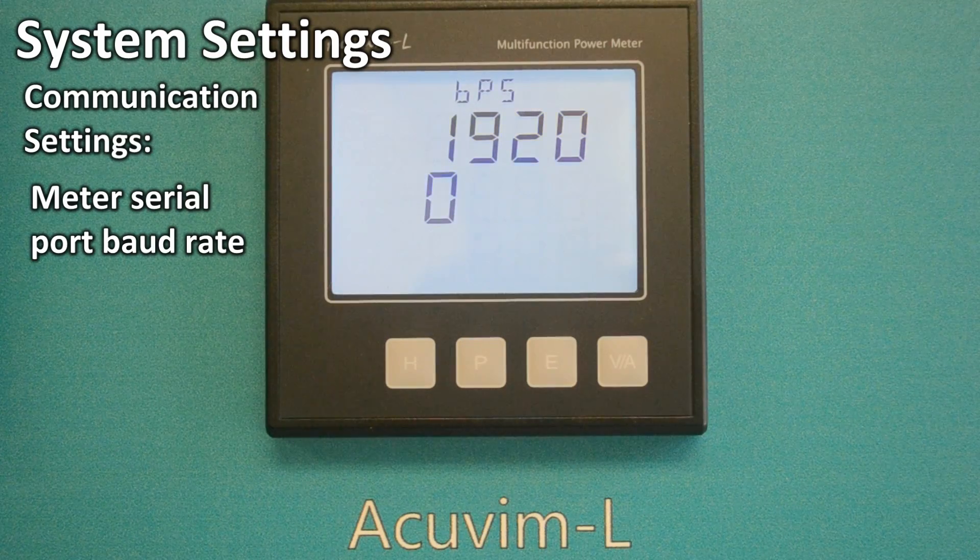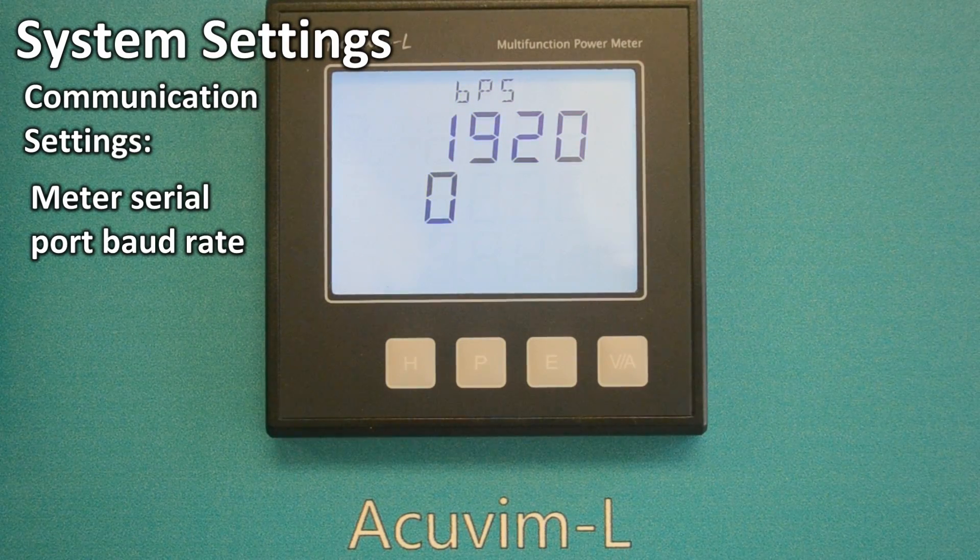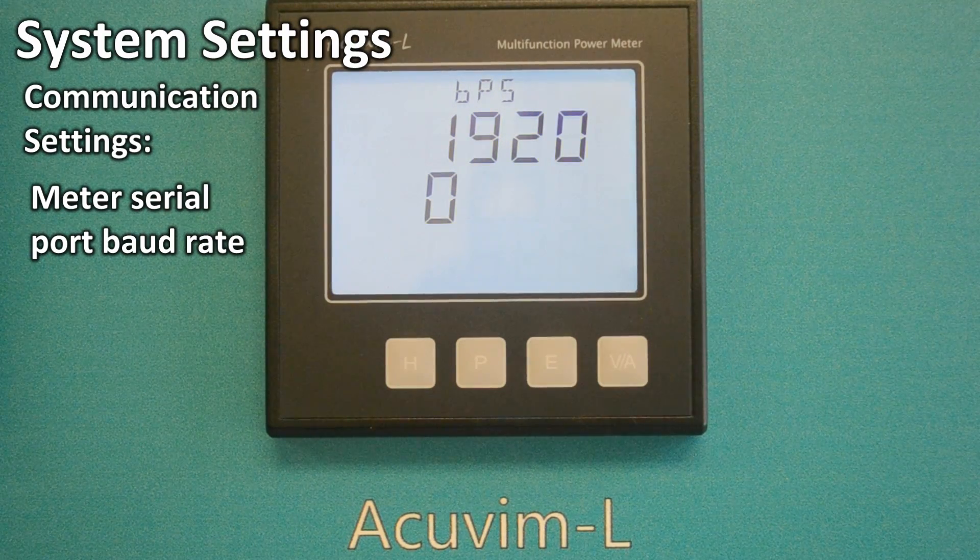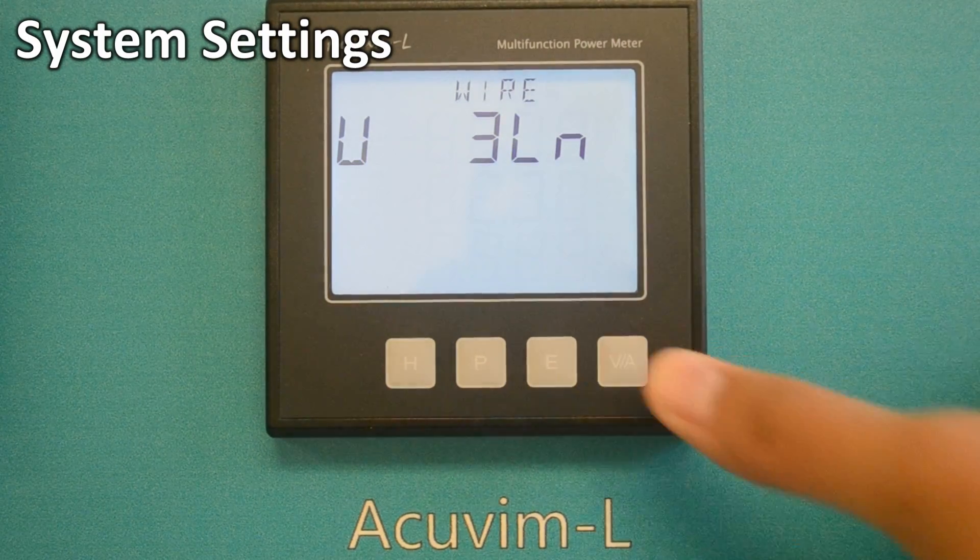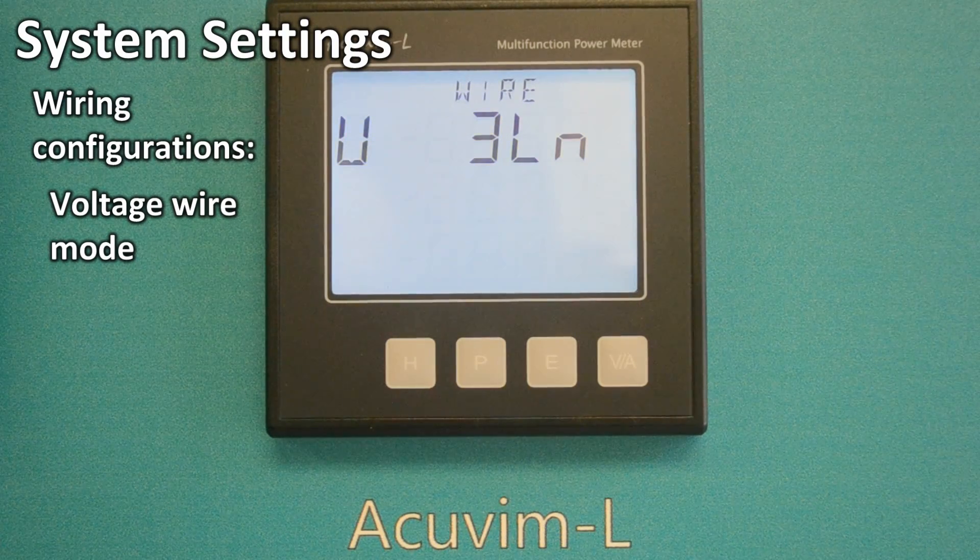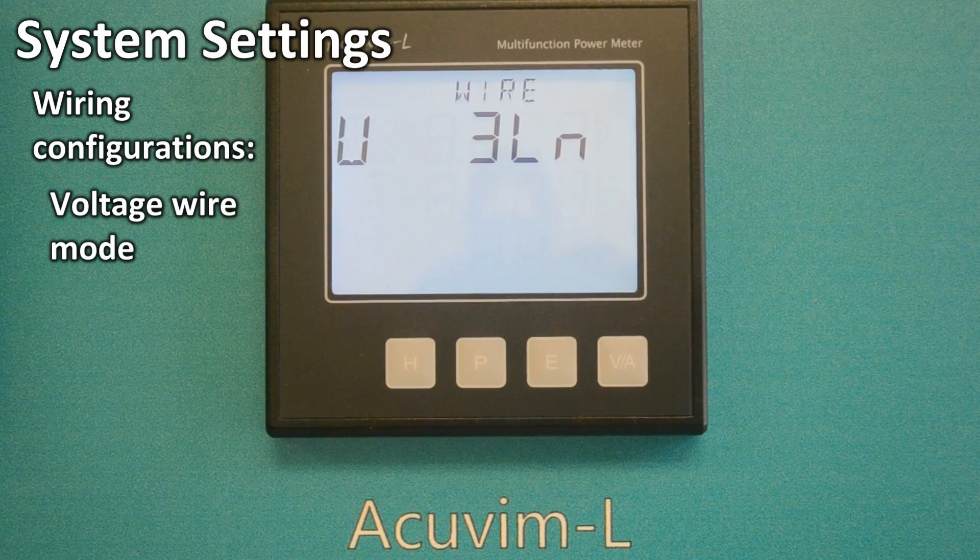BPS 19,200 means the meter serial port baud rate is 19,200 BPS. Wire mode U3LN means the voltage wire mode is 3 hot wires and 1 neutral.